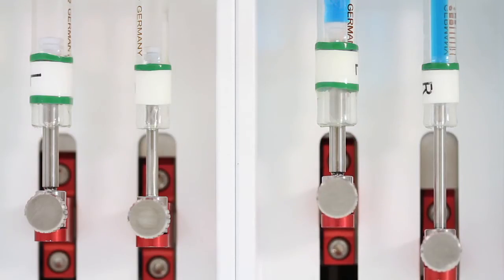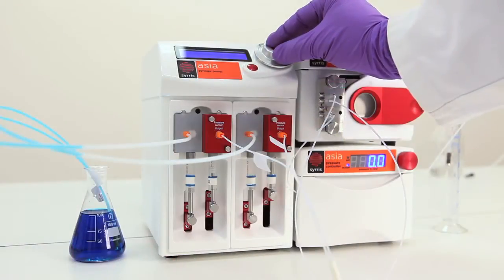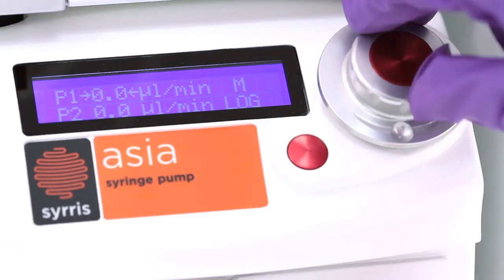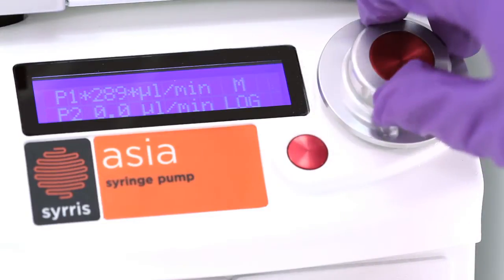This compact module features two independent flow channels each with an integrated pressure sensor. It enables pressures up to 20 bar and a wide flow rate range from 1 microliter to 10 milliliters per minute.